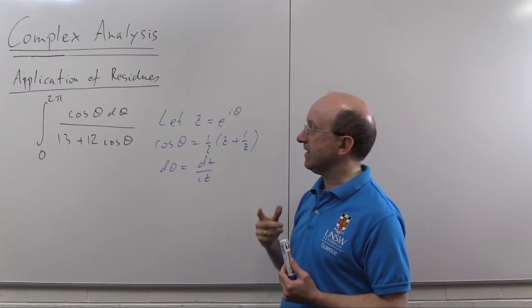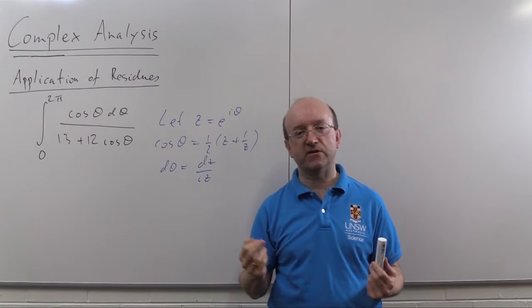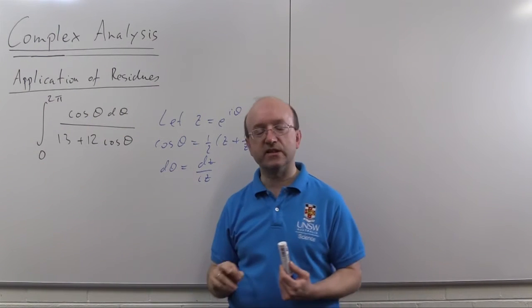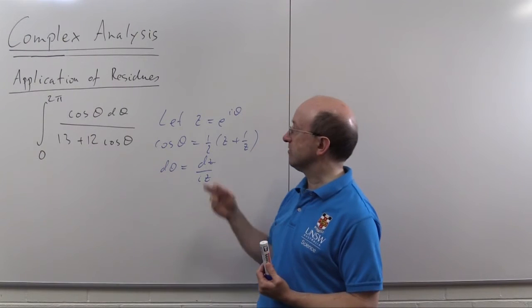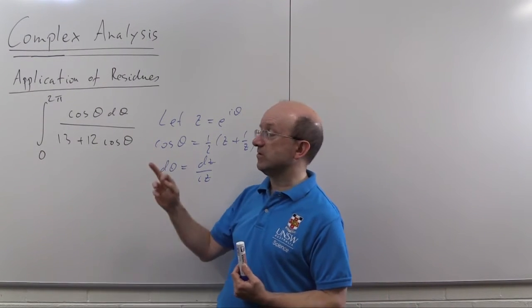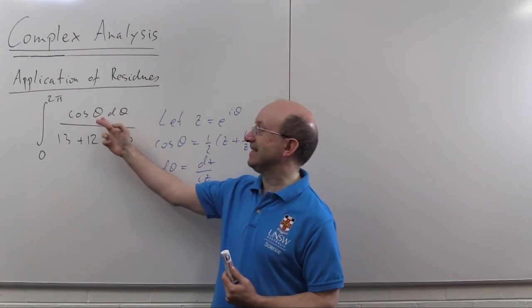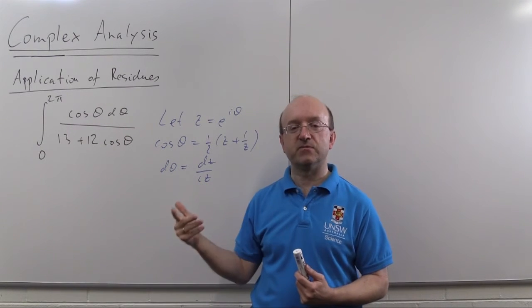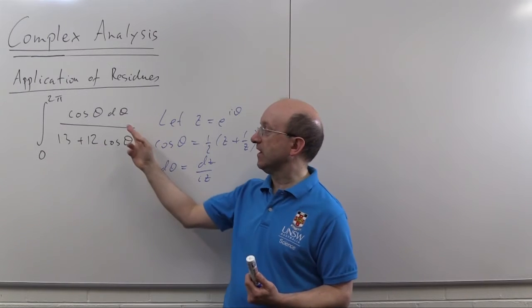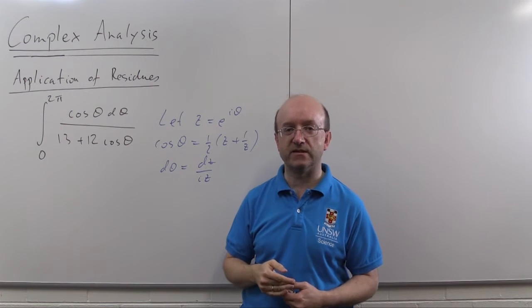Now there's a little extra trick that we can use here to make these particular ones a bit easier when some of the trig functions occur on the numerator. I've just got cos theta here, if I'd had cos two theta of course I'd be involved with z squared e to the two i theta. What we do, to save ourselves having to calculate the residue to an extra pole, is we actually add in i times the other trig function. In this case we're going to look at the integral of cos theta plus i sine theta d theta over the same thing, and then take the real part at the end.